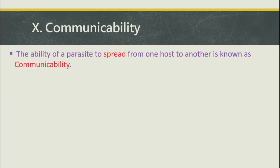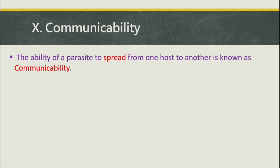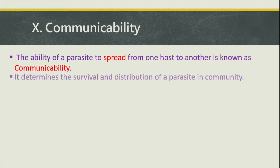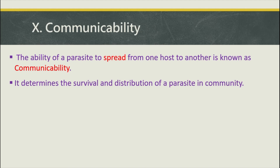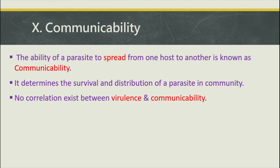The next factor is communicability — the ability of a parasite to spread from one host to another. If highly communicable, it involves a large number of the population and determines the survival and distribution of the parasite in a community. Importantly, there is no correlation between virulence and communicability. For example, the COVID-19 virus is highly communicable, but its virulence power may differ — it is not necessarily highly virulent.